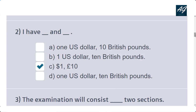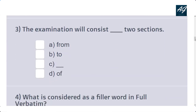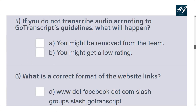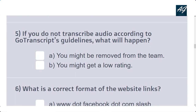The third question is a grammatical question: 'The examination will consist dash section' — the answer is 'consist of two sections.' The fourth or fifth question asks what is considered a filler word in full verbatim. 'Kind of,' 'a,' and 'c' are the correct options.